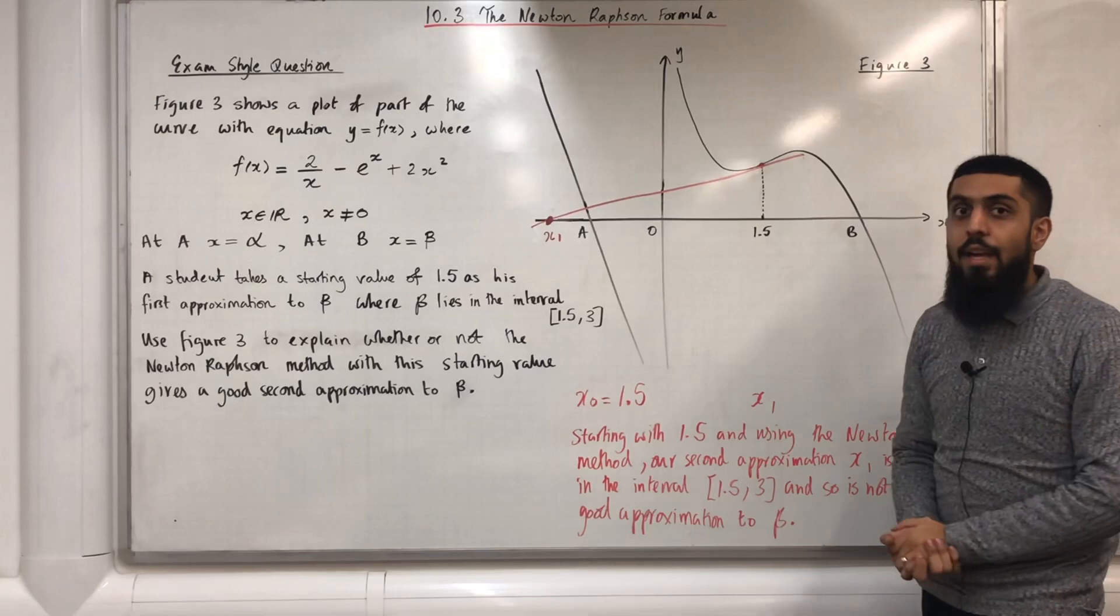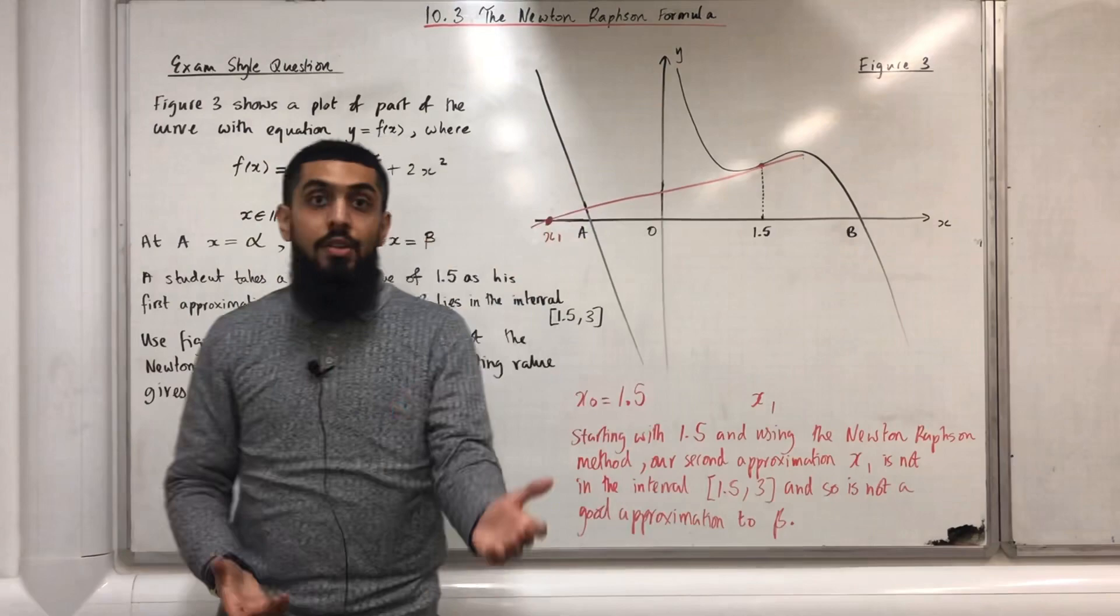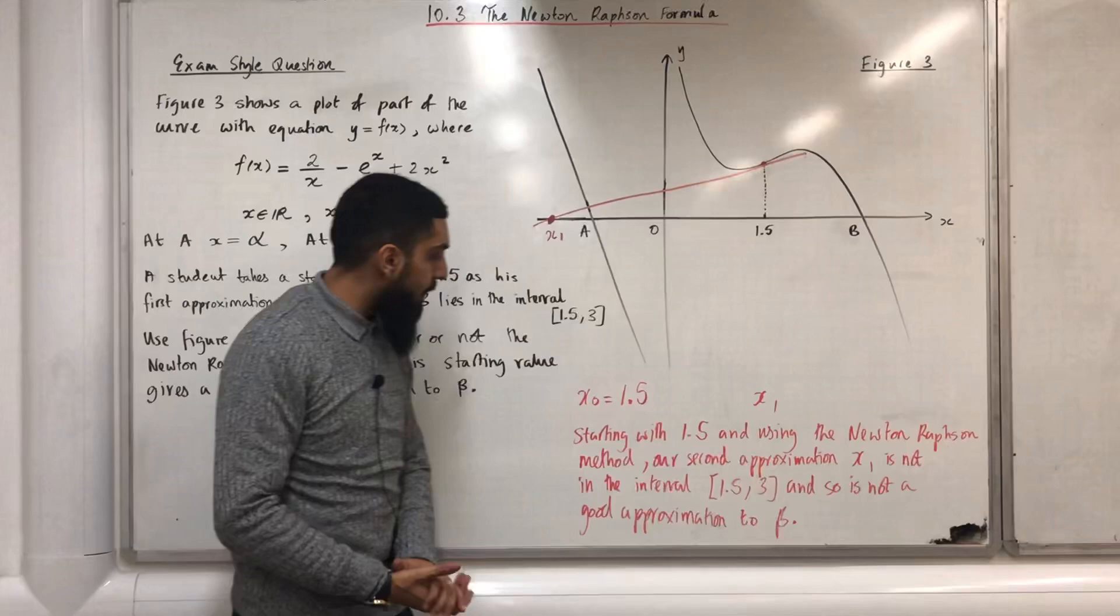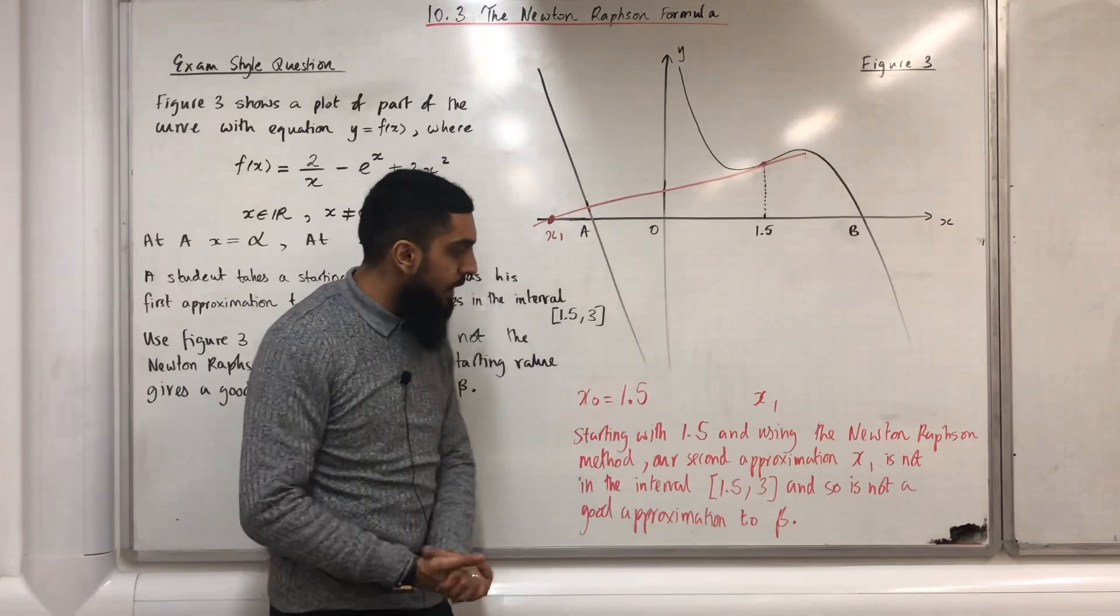So, here is the conclusion. You need to write the conclusion to get full marks. Starting with 1.5 and using the Newton-Raphson method, our second approximation x1 is not in the interval [1.5, 3] and so is not a good approximation to beta. Don't forget to write your conclusion.